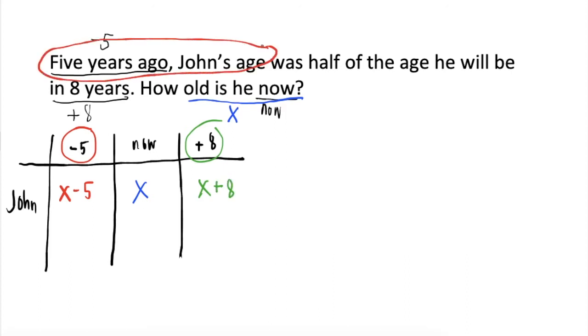Five years ago, John's age, so that is x minus five, was or equal to half of. Ang keyword natin dyan ay of. This tells us na we have to multiply. So, one half times, anong imumultiply natin? Age ni John in eight years, which is x plus eight.